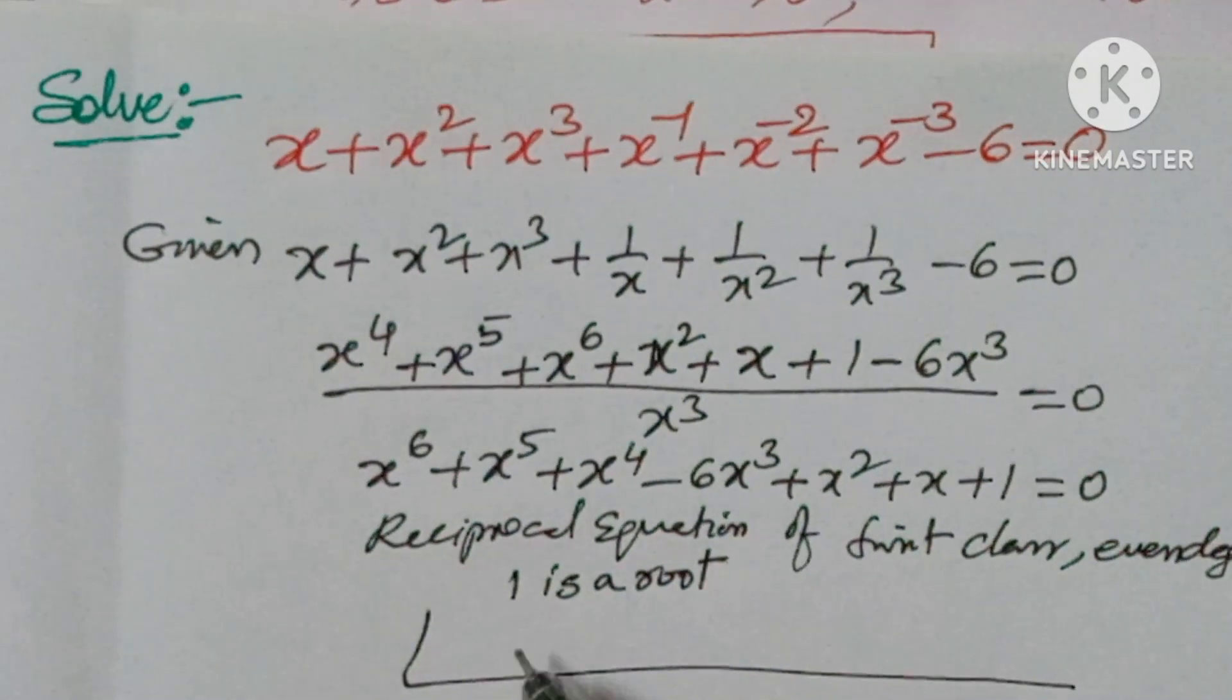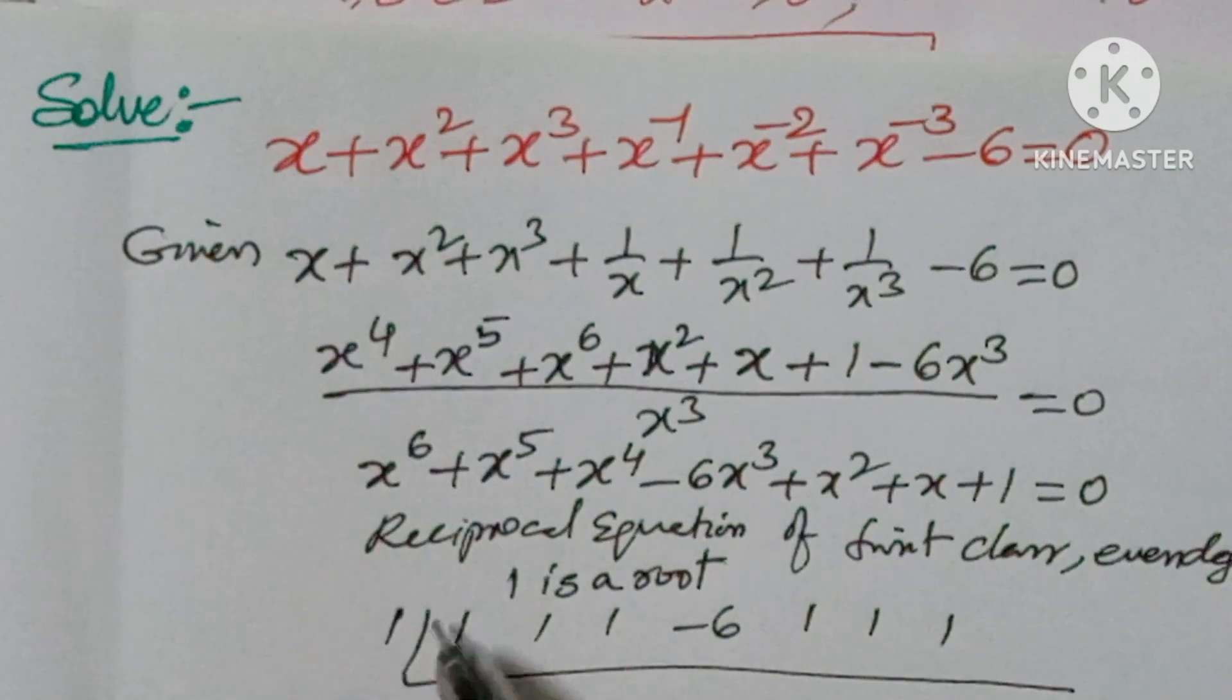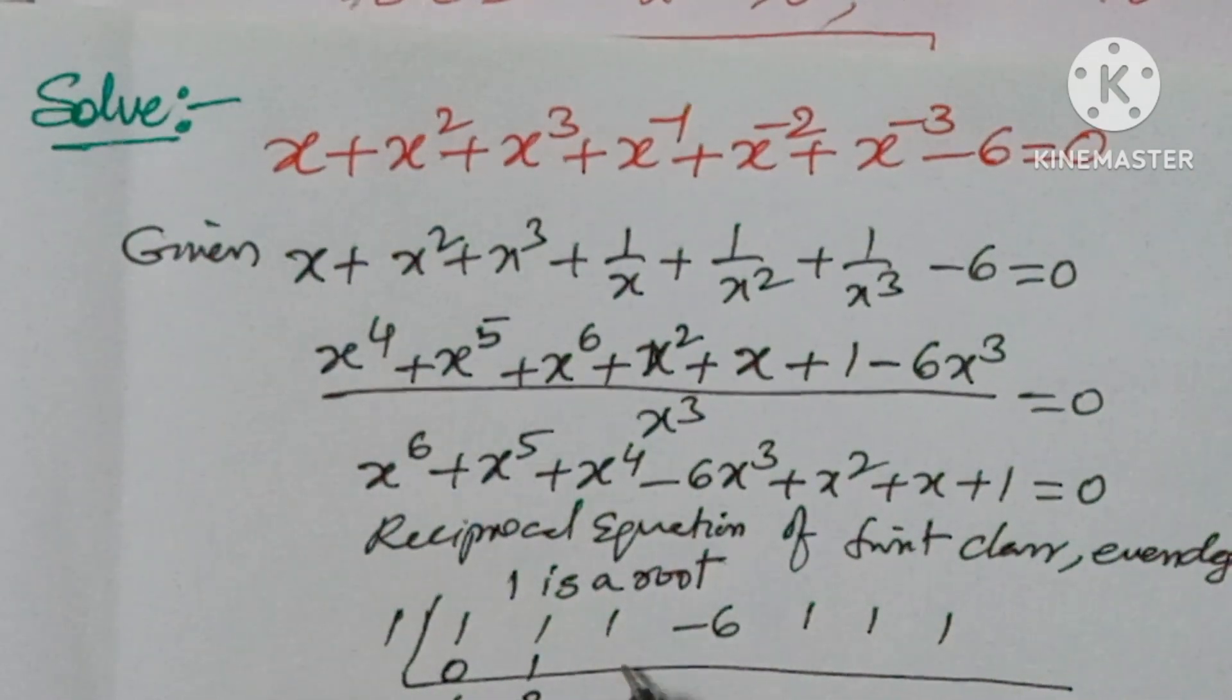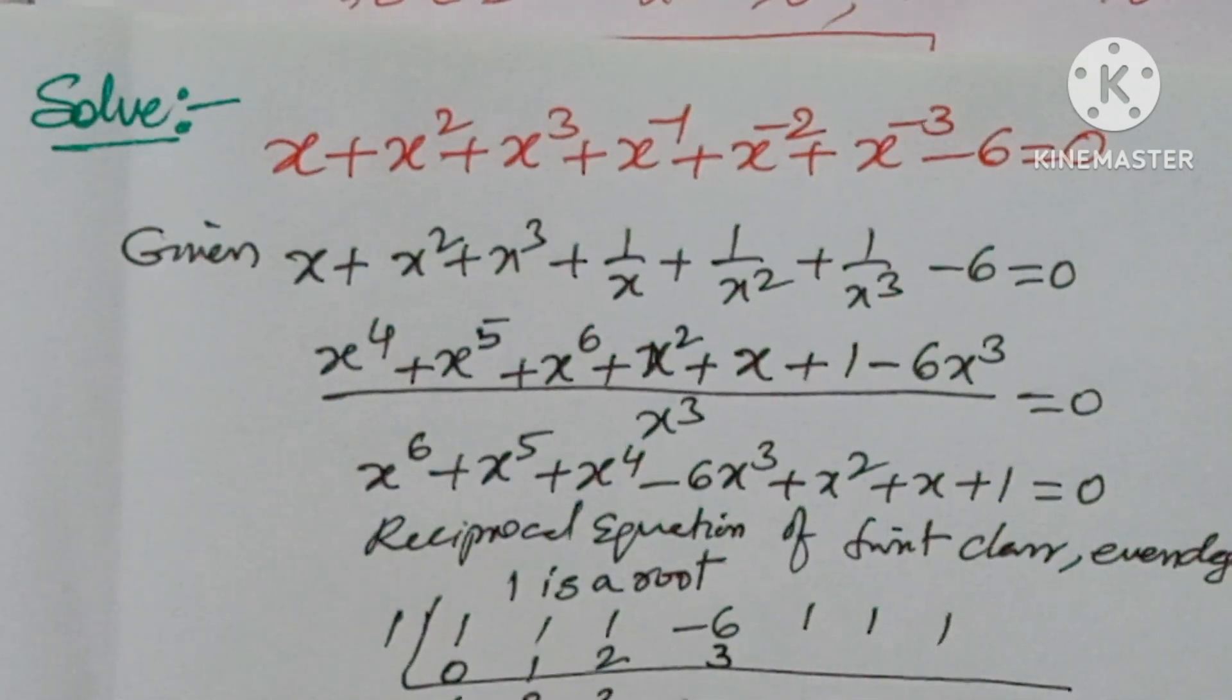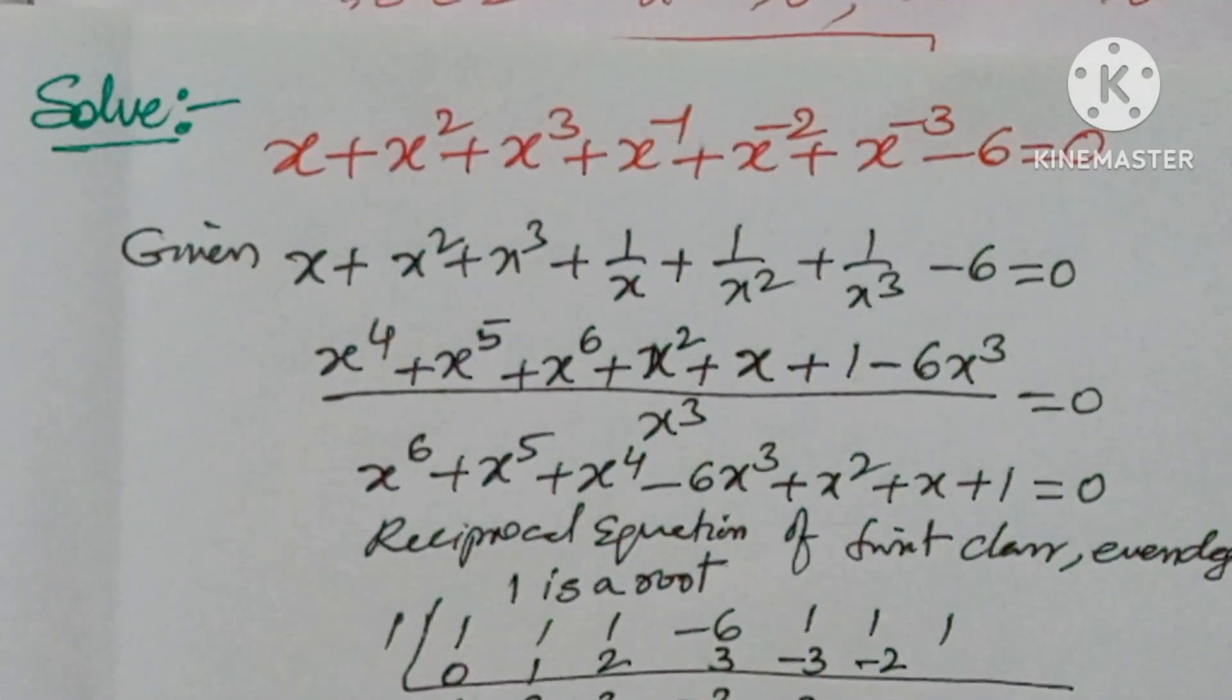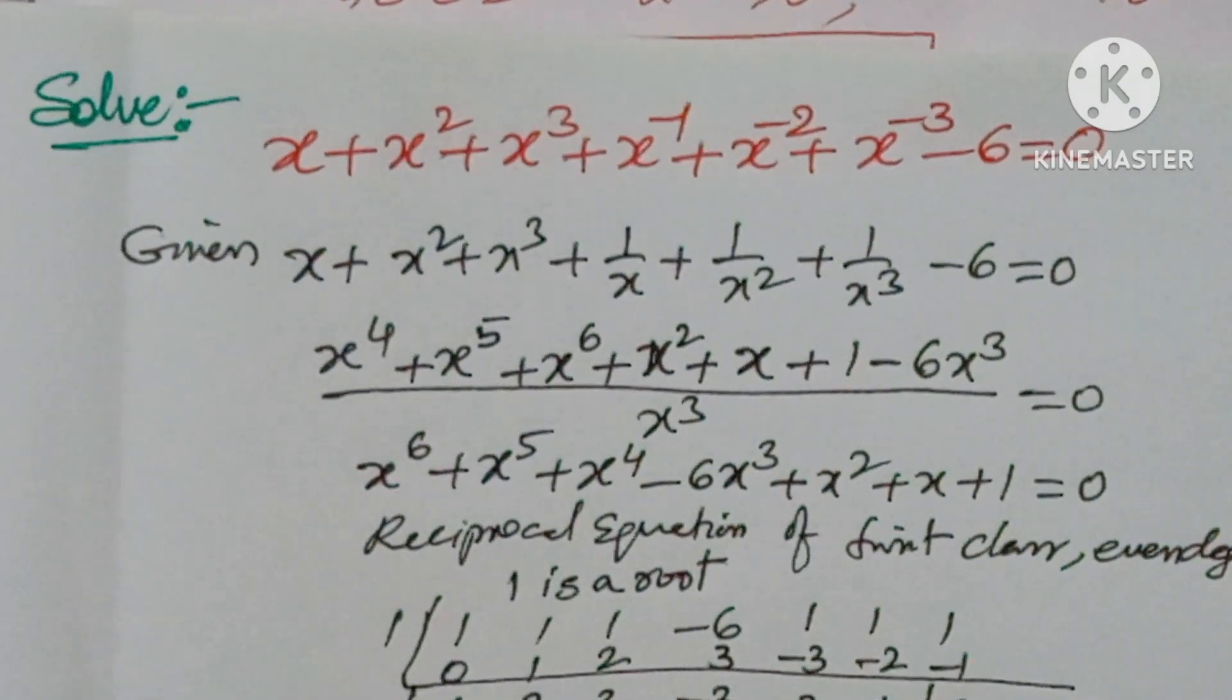Using synthetic division with coefficients 1, 1, 1, minus 6, 1, 1, 1: We get 0, 1, 2, 3, minus 3, minus 2, minus 1, 0. So 1 is a factor.